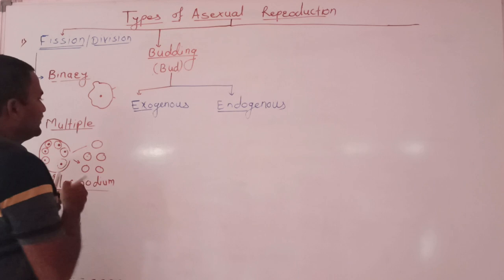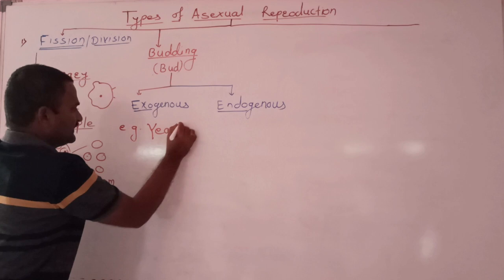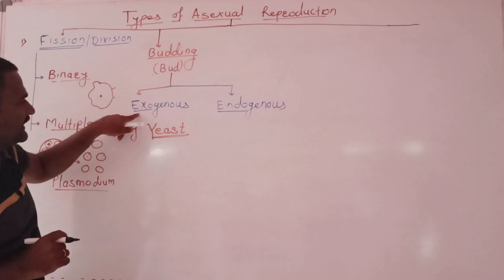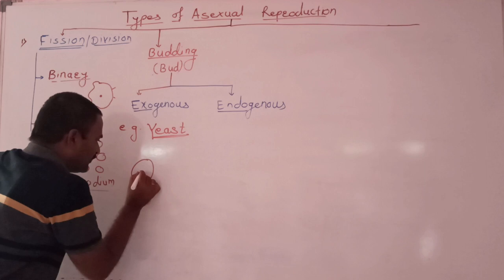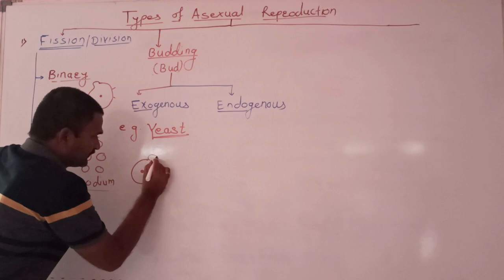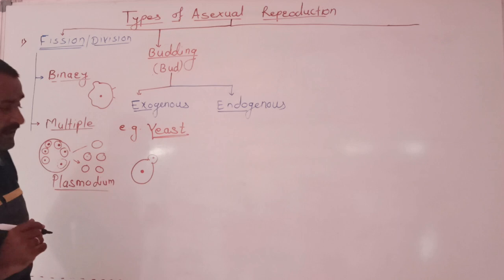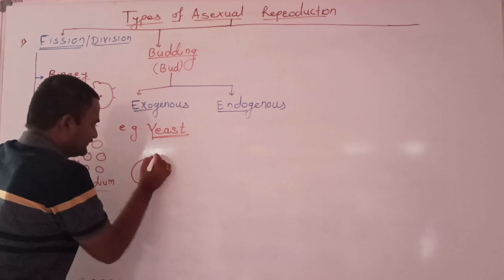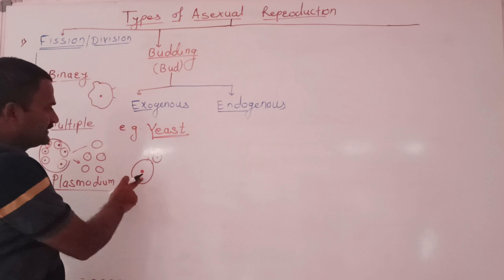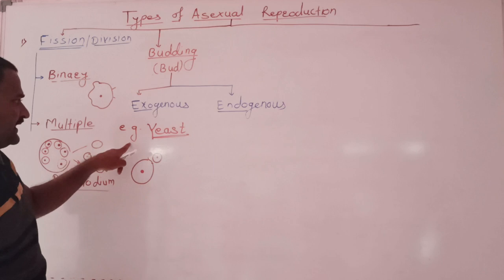Exogenous budding is found in a unicellular fungus and this unicellular fungus is yeast. Yeast is the example of the organism which reproduces by exogenous budding. Suppose this is the cell or the body of the parent organism. On the surface of the body, a tiny outgrowth develops. This outgrowth is called a bud. And later on, this bud will detach from the parent organism to produce the new organism. This is exogenous budding. Example, yeast.